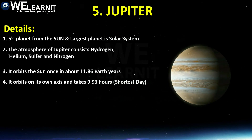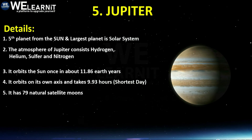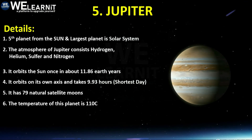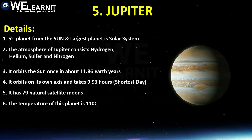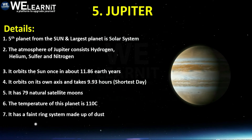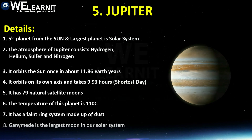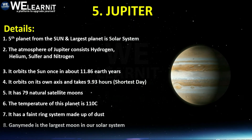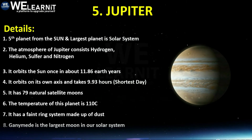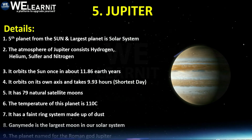Jupiter has 79 natural satellites. The temperature of this planet is minus 110 degrees Celsius. It has a faint ring system made up of dust. Ganymede is the largest moon in our solar system and it belongs to Jupiter, being larger than our Moon. This planet is named for the Roman god Jupiter.